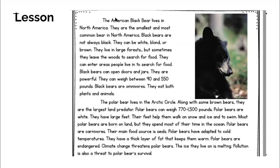The American black bear lives in North America. They are the smallest and most common bear in North America. Black bears are not always black — they can be white, blonde, or brown. They live in large forests, but sometimes they leave the woods to search for food. They can enter areas where people live to search for food. Black bears can open doors and jars — they are powerful. They can weigh between 90 and 550 pounds. Black bears are omnivores; they eat both plants and animals.